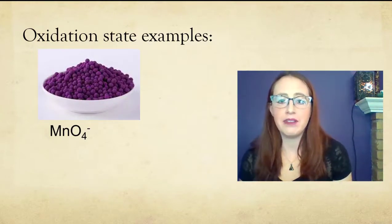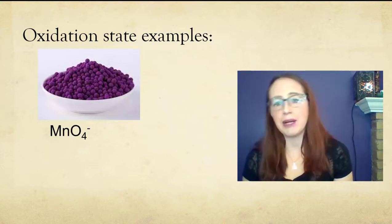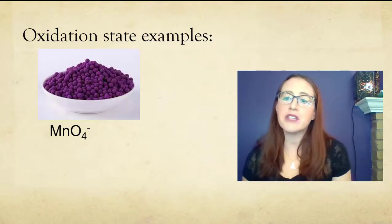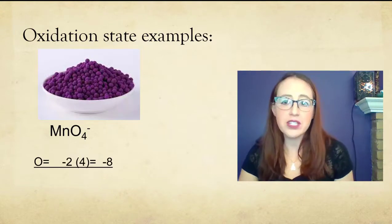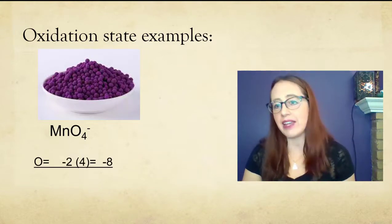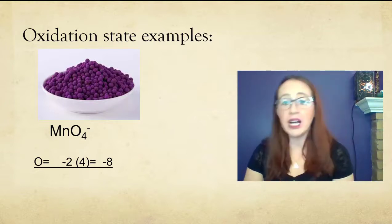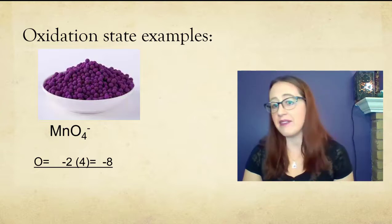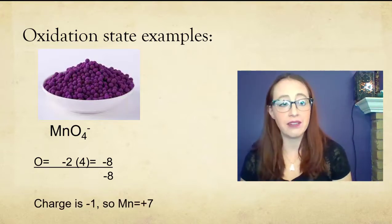Let's look at MnO4- again. We can use the knowledge we have about the oxygen to solve for the manganese. Since each of the four oxygens have a negative 2 oxidation state, with just the oxygens, there's a negative 8. The only thing to balance that out is 1 manganese, and so that must have an oxidation state of plus 7 to give us an overall charge of negative 1.